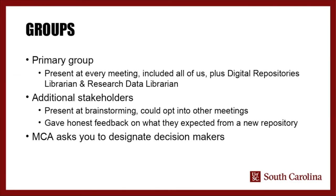Our primary group included our decision makers, which is part of the MCA process. Decision makers have to listen to everyone else's ratings, but they don't have to take the average as the final score. So if you're the decision maker for usability, you have to listen to and consider your colleagues' scores — but if the median is a two and you believe the product merits a one, you can still give it a one as long as you considered the input. This helps protect scores from being swayed by too many representatives from a single shared perspective while ensuring those representatives are heard.